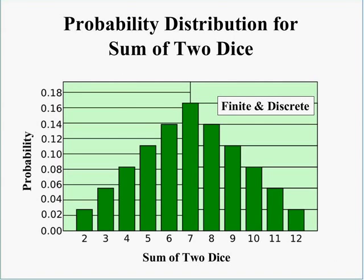Here's a probability distribution that looks like a normal distribution, but it's not. On the horizontal axis we have the sum of two dice being rolled. At the far left both dice show 1, giving a sum of 2; at the far right we have two sixes summing to 12. In the center, where the sum is 7, there are several combinations: 4 and 3, 5 and 2, 1 and 6, and so on. The probabilities for each sum are listed on the vertical axis. This is finite and discrete data.